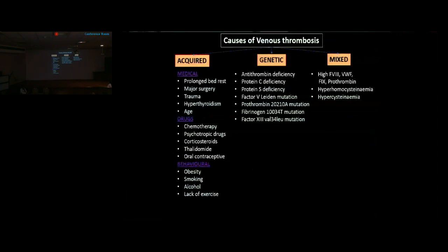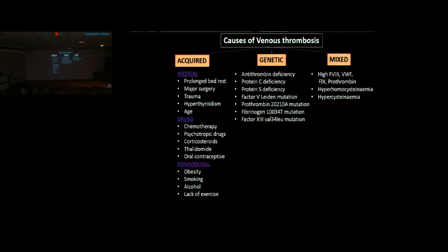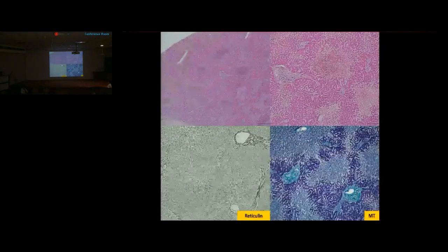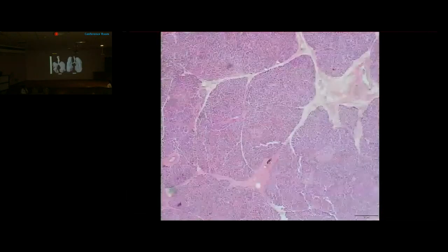Liver sections showed maintained lobular architecture with central hemorrhagic necrosis and preserved periportal hepatocytes — consistent with ischemic hepatitis. Reticulin stain confirmed maintained framework and Masson's trichrome showed no fibrosis. Lungs showed pulmonary edema with fluid-filled alveolar spaces and capillary congestion. Kidneys showed acute tubular injury with loss of brush borders and nuclear loss. Esophagus, stomach, and intestine showed submucosal congestion but were largely unremarkable.